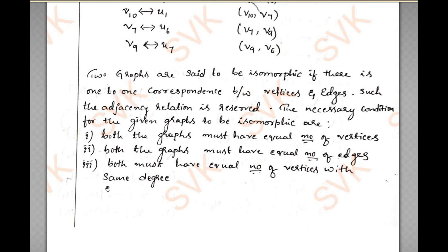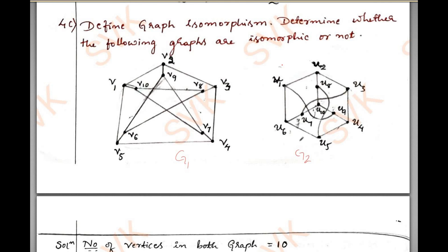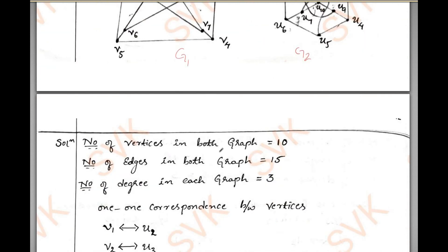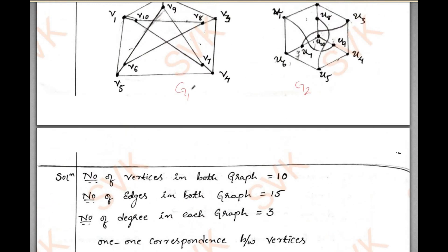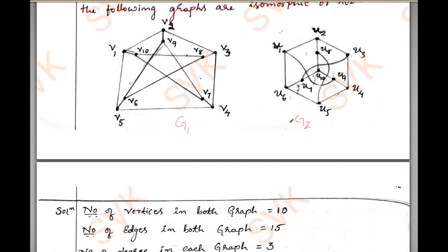Now we shall see whether the given graphs are isomorphic or not. First, I will check that the given graphs have equal number of vertices, equal number of edges, and same degrees. We have 10 vertices in G1 and also 10 vertices in G2. Therefore, both graphs contain 10 vertices. The number of edges is 15.